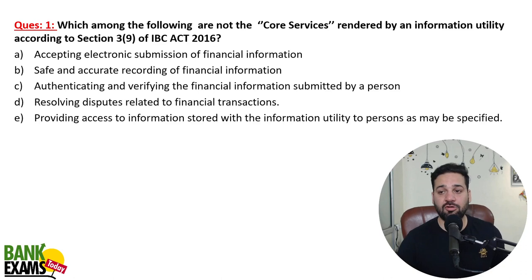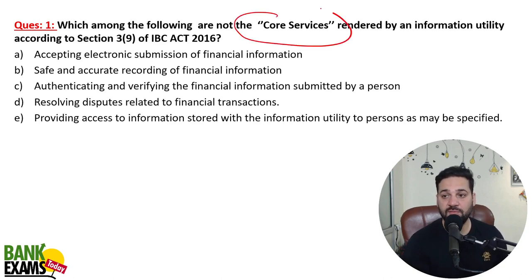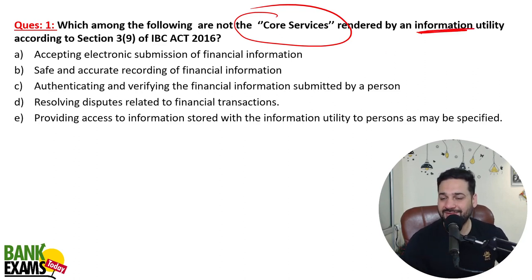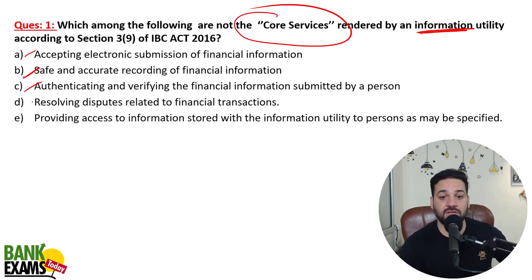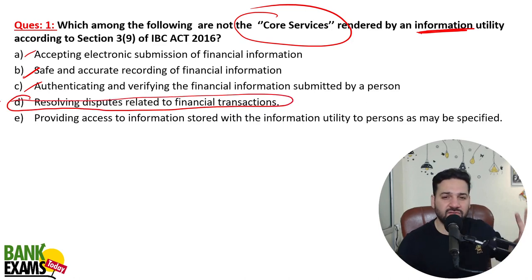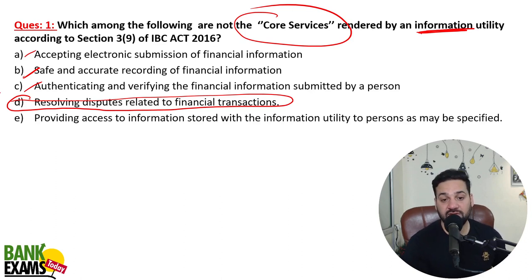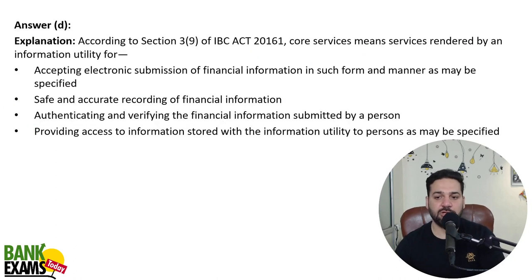Which among the following are not the core services rendered by information utility according to Section 3 sub-section 9? In the IBC Act, which service does the information utility not provide? Accepting electronic submission of financial information is correct. Safe and accurate recording of financial information is correct. Authenticating and validating the financial information submitted by a person is correct. Resolving the dispute related to financial transaction — this one is false. Dispute resolution is not a job of information utility. Providing access to information stored with the information utility is correct.